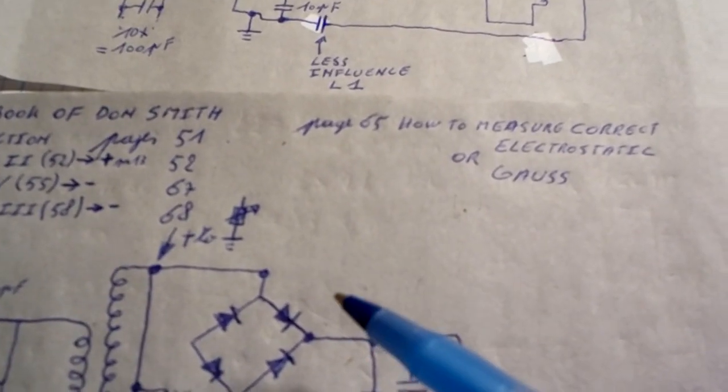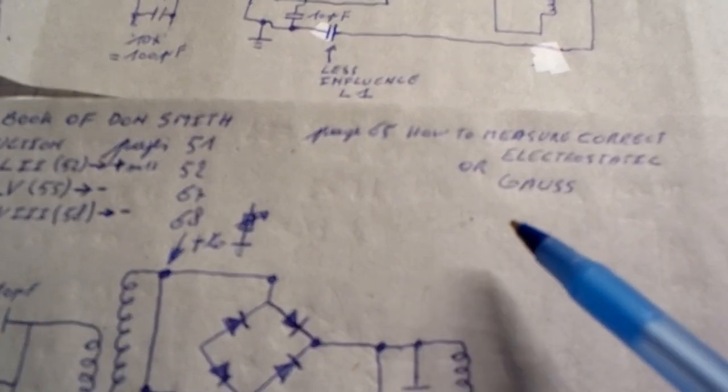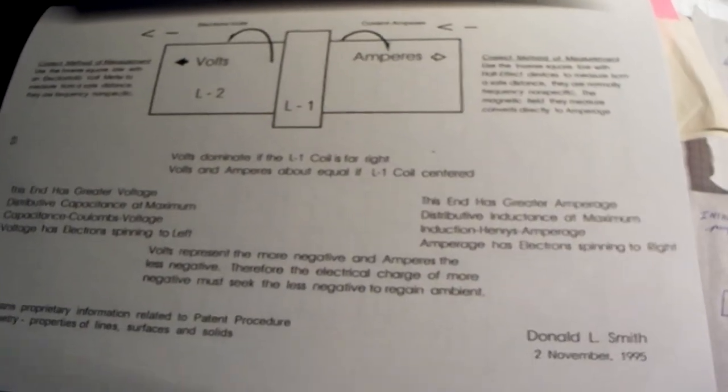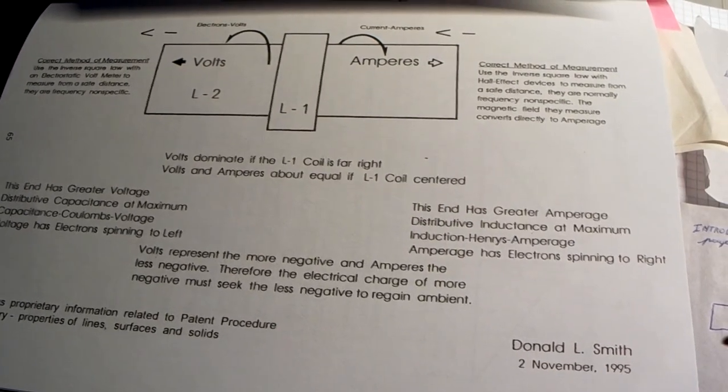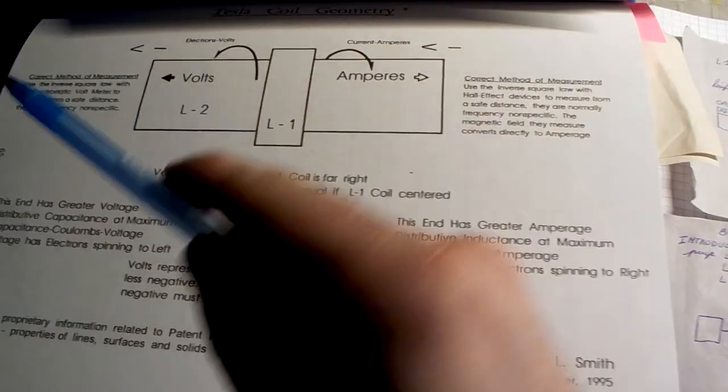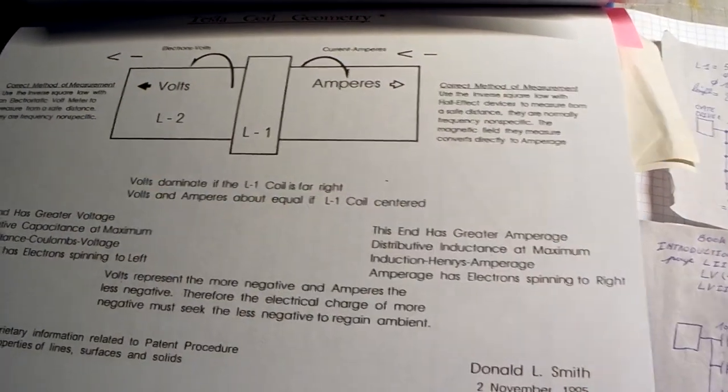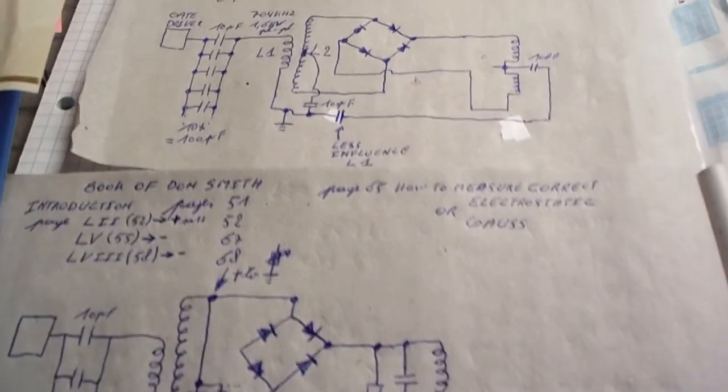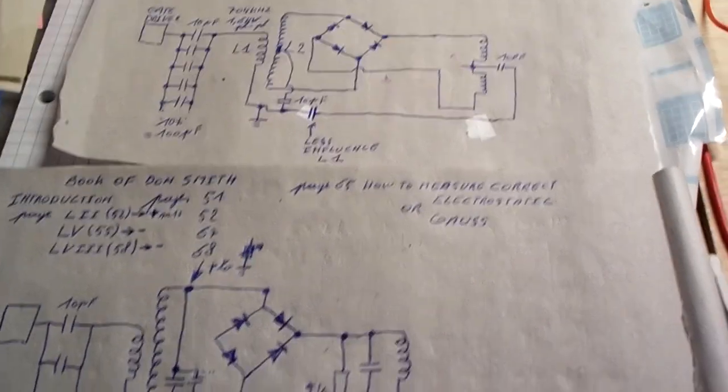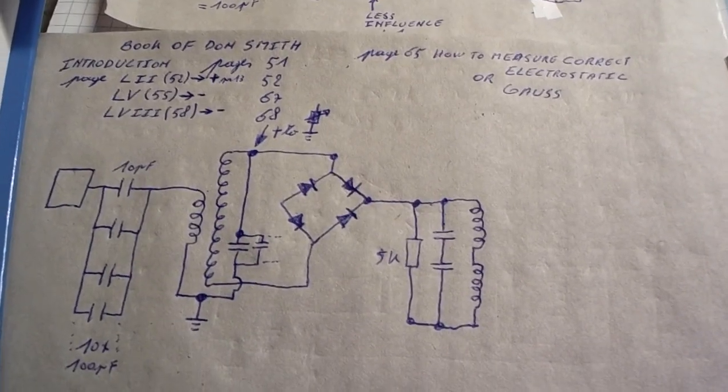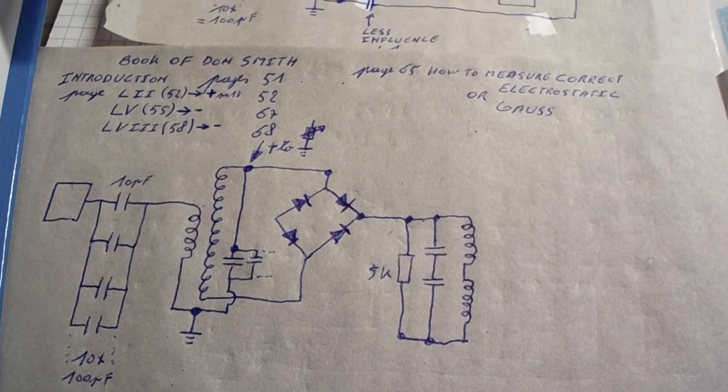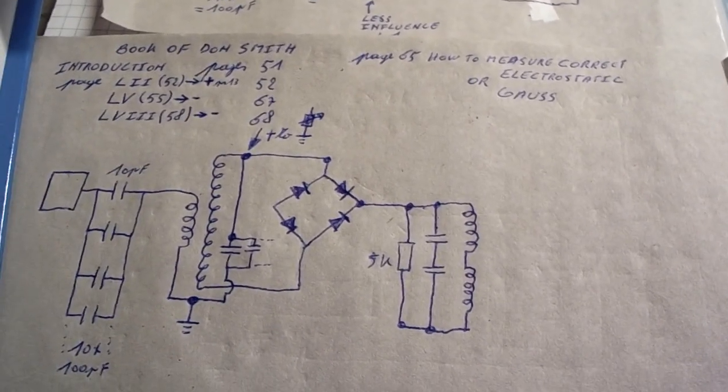Also for the measurements with the gauss meter, I came to a page in the book. It's this page, but it's a normal Don Smith PDF, so you can find it on the internet for those of you who don't have the book. And over here you can read in the text what is the correct measurement. But I'm not going to go deeper into that. I don't want to get into trouble with the book. But you see the page and you can find it everywhere.